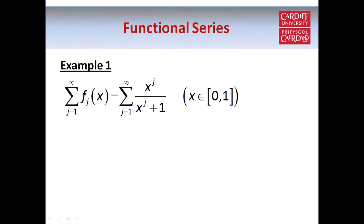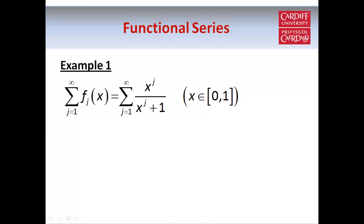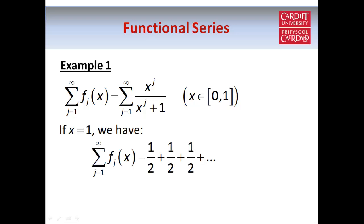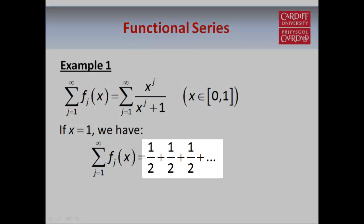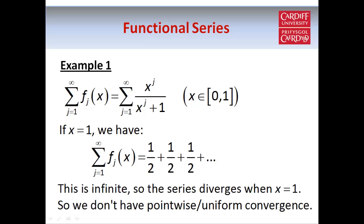First we're going to look at some series which are not convergent. In this example notice that our domain goes from zero to one and includes the endpoints zero and one. Often in these examples the very first thing you should consider is whether there's a particular value of x which causes the series to diverge. If x equals one, then since one to the power j is always equal to one, each term in the series is equal to one over one plus one, which is a half. So our series just goes half plus half plus half, and since we have infinitely many terms the total is actually infinite. Therefore it's impossible to define a real-valued limit function, and so our functional series is not pointwise or uniformly convergent.